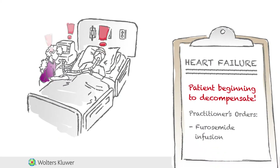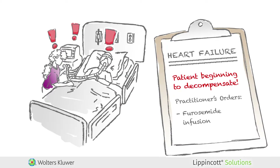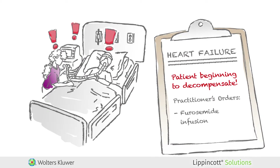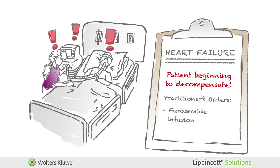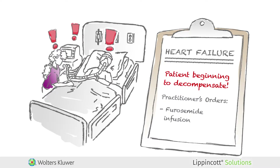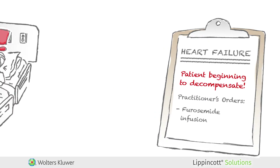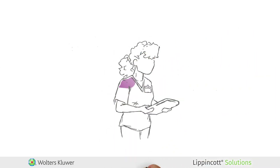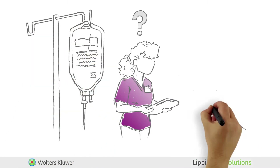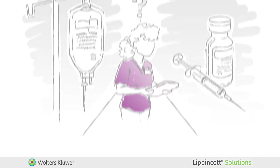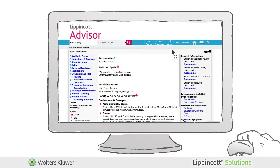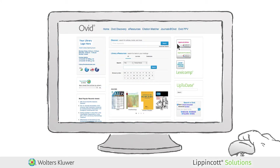But wait — something is wrong. The patient begins to decompensate. A furosemide infusion is ordered, and the nurse starts the furosemide infusion immediately. But she wonders: what is more effective for decompensation — an infusion of furosemide or a bolus? A quick search in Ovid and the JBI database at point of reference reveals an evidence summary for heart failure decompensation.